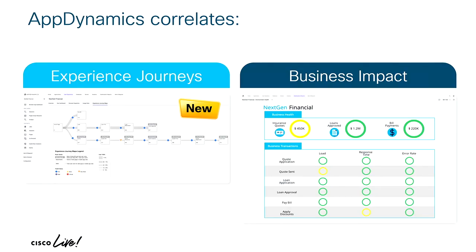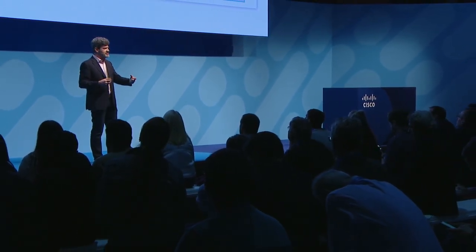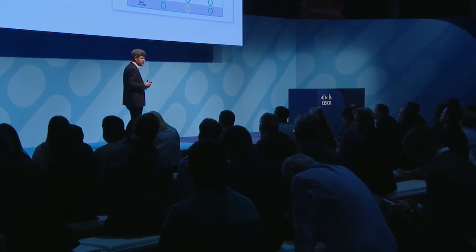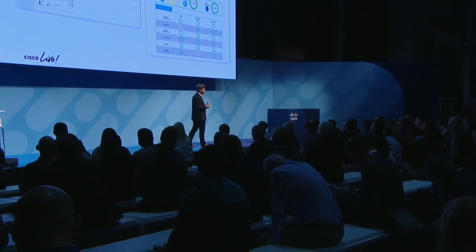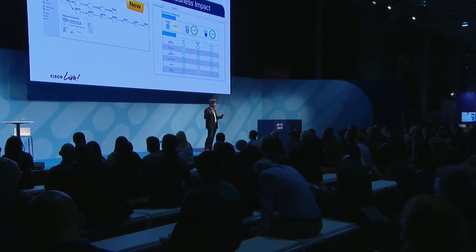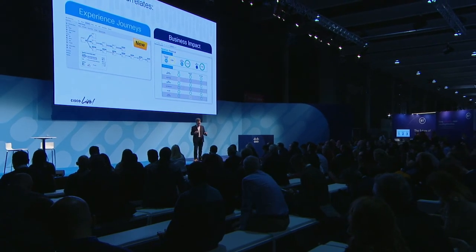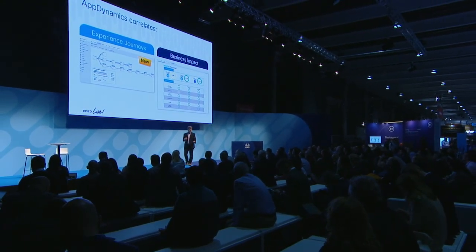In this example, it shows a network policy change that is root-caused into the data center — you can see it's affecting a particular business transaction for that application and you can now go ahead and fix it. AppDynamics also correlates the business transaction and what's happening in the application to the business impact, measured by business metrics. You can look at your KPIs for both technology performance and business performance — who is affected, how many dollars are involved, common SKUs in the cart, checkout abandonment rates — things the business cares about.